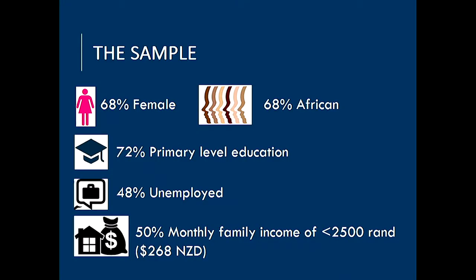Just a bit about the sample. It's important to point out the differences between our sample and what we might see working within chronic illness in New Zealand. This group had quite a low level of education, a high rate of unemployment, and low levels of monthly family income — a really low socioeconomic status group. That's something important to remember when thinking about working within this context.